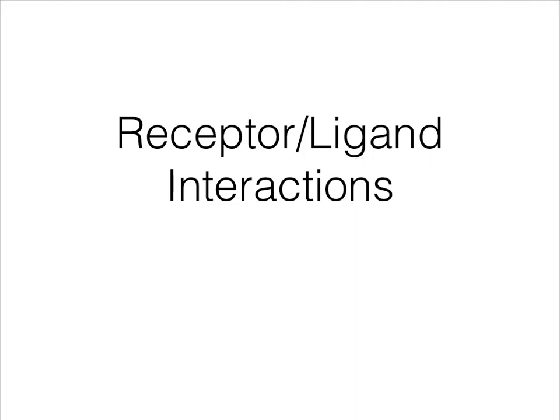A ligand is literally something that binds to something else. Ligand comes from the same root word as to ligate, or ligament, or ligature — all of those are things that tie things together, that bind things to other things. So a ligand is something that binds to something. Specifically in our model, what a ligand is going to be binding to is a receptor.